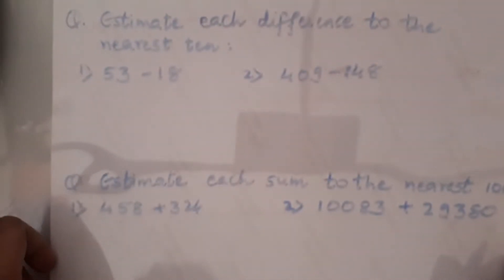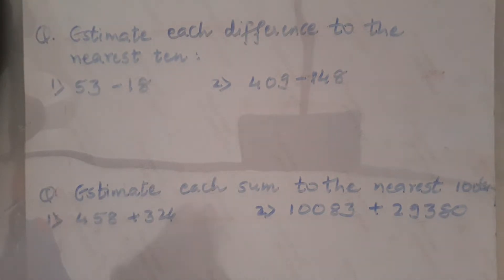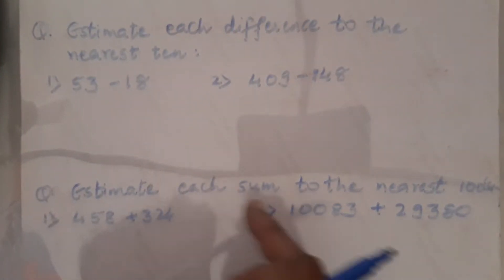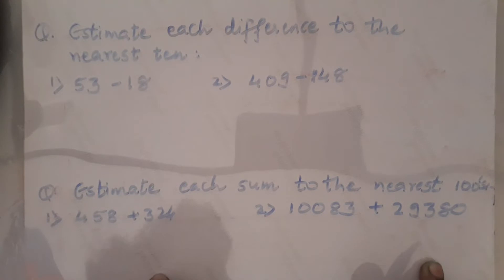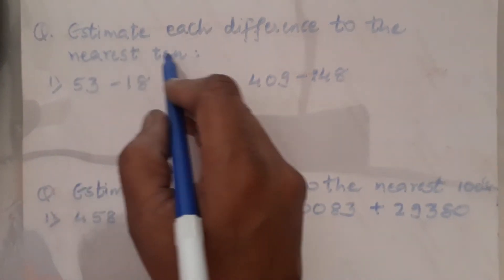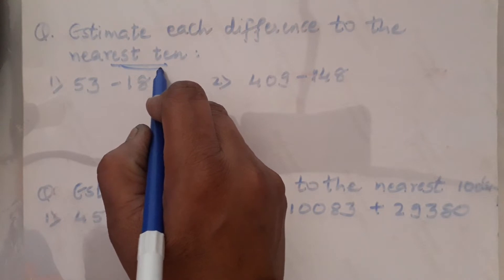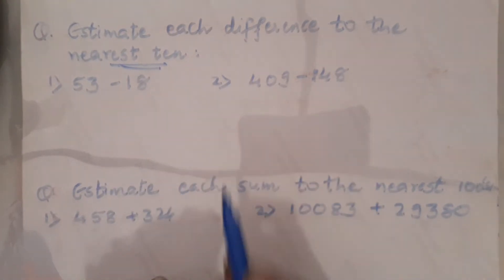Now, if we move further, sometimes you are asked to write an estimate. When you have to estimate the sum, difference, product, or quotient, a condition is given — for example, estimate each difference to the nearest tens, nearest hundreds, or nearest thousands. Here the condition given is nearest tens, so you apply this condition only. When asked using the general rule, you round off each factor to the greatest place.